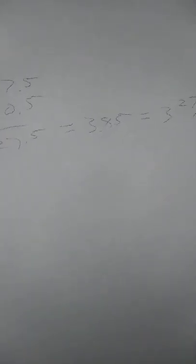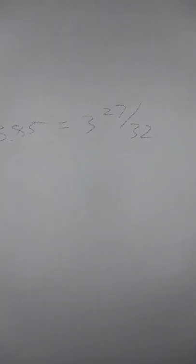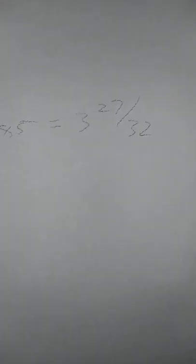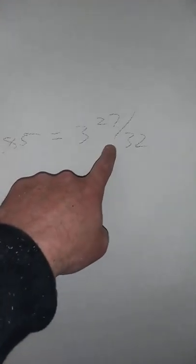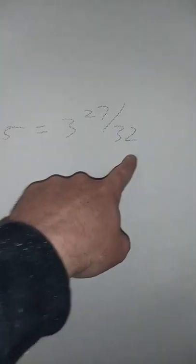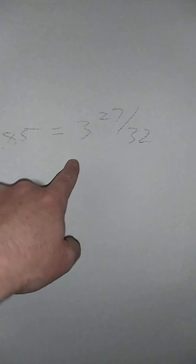Now divide that twenty-seven and a half inches by the number of balusters — seven. That number came out to 3.85 as a decimal, which converts to three and twenty-seven thirty-seconds. That spacing — three and twenty-seven thirty-seconds — is going to be the spacing from baluster to baluster.